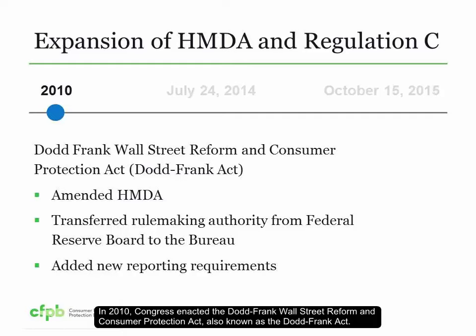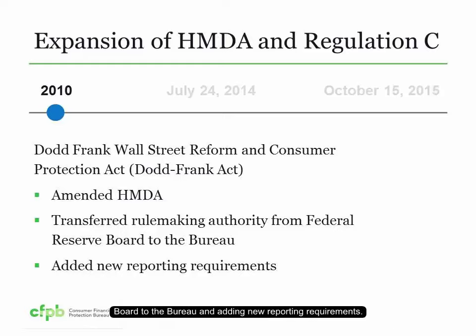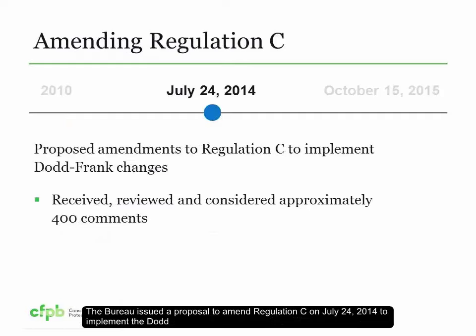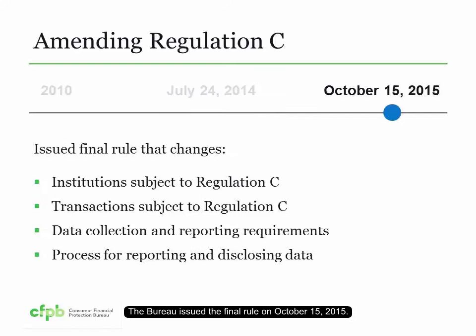In 2010, Congress enacted the Dodd-Frank Wall Street Reform and Consumer Protection Act, also known as the Dodd-Frank Act. The Dodd-Frank Act amended HMDA by transferring rulemaking authority from the Federal Reserve Board to the Bureau and adding new reporting requirements. The Bureau issued a proposal to amend Regulation C on July 24, 2014 to implement the Dodd-Frank Act amendments, required the collection, recording, and reporting of additional information to further HMDA's purposes, and modernized the manner in which institutions report HMDA data. The Bureau received approximately 400 comments and carefully reviewed and considered those comments. The Bureau issued the final rule on October 15, 2015.